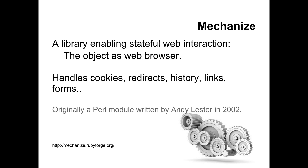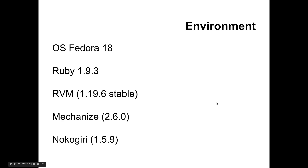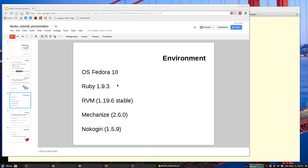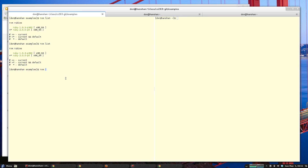Before we dive into some examples, let's talk about the environment I'm using. I'm using Fedora 18 64-bit, and more importantly I'm using Ruby 1.9.3. I'm also using the Ruby Environment Manager, which I'll get into in a second, and I'm using Mechanize 2.6 and Nokogiri 1.5. You could install the gems using your system's package manager — on Fedora that would be yum, on Ubuntu that'd be apt-get — but you could also install them using RVM.